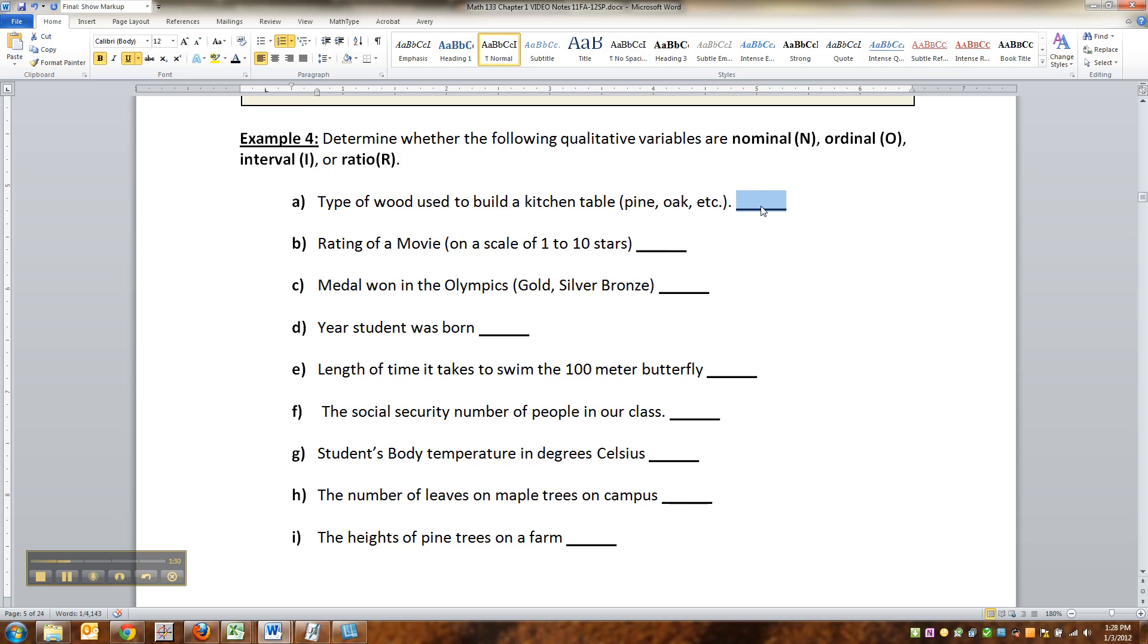The type of wood you would use in your kitchen, like pecan and all of that, that's qualitative and it's nominal. There's no rank to pine versus oak. But the rating on a movie or on a statistics instructor, so when you fill out those things at the end of the semester and they say how did you rate this person's scale one to ten, that's ordinal.